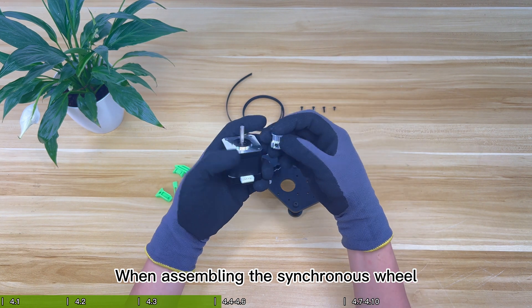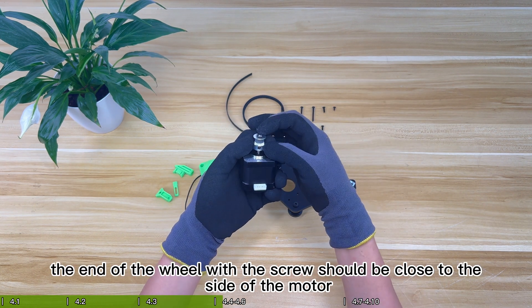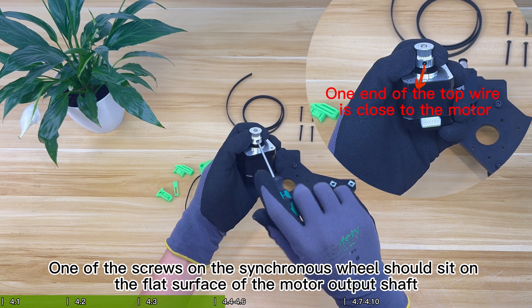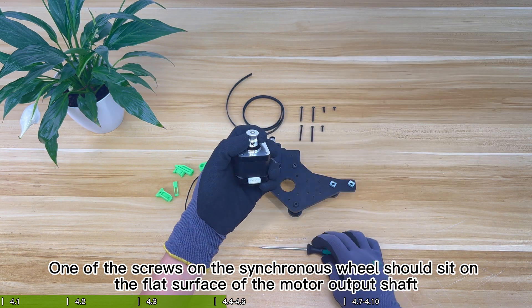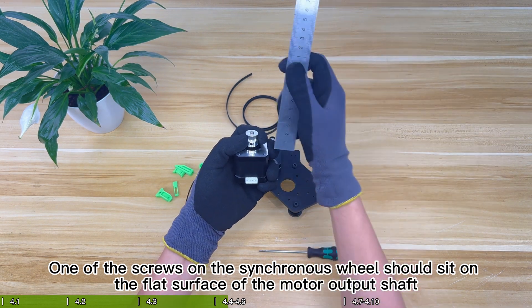When assembling the synchronous wheel, the end of the wheel with the screw should be close to the side of the motor. One of the screws on the synchronous wheel should sit on the flat surface of the motor output shaft.